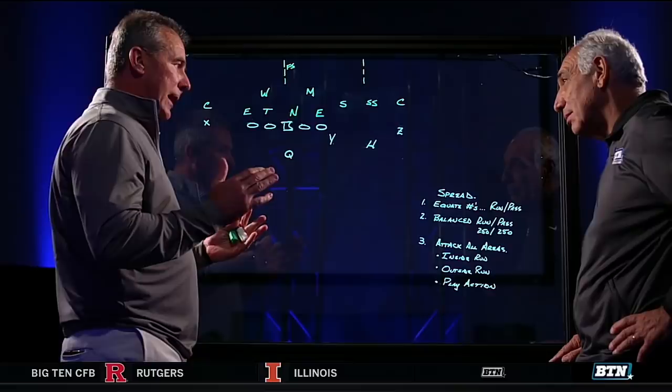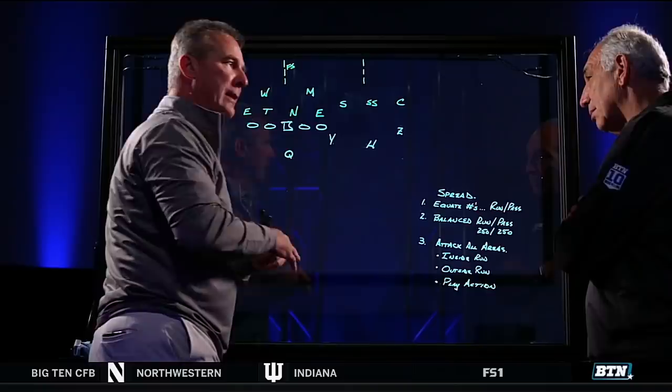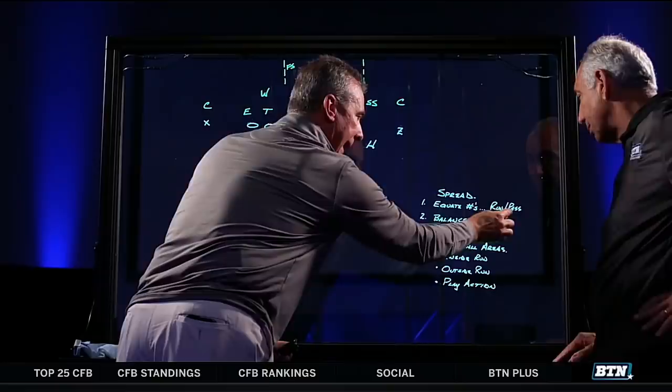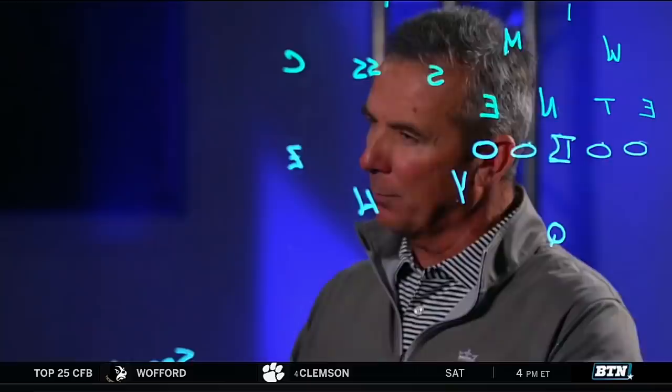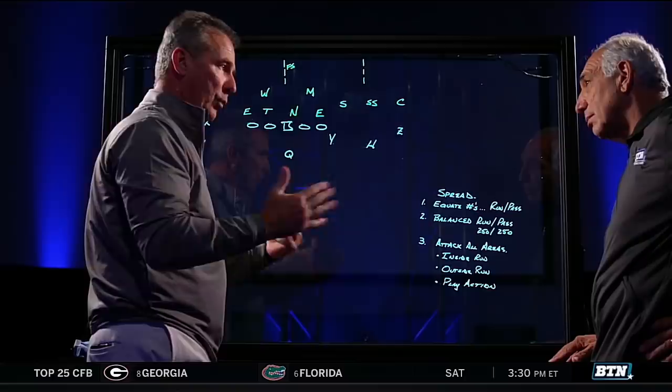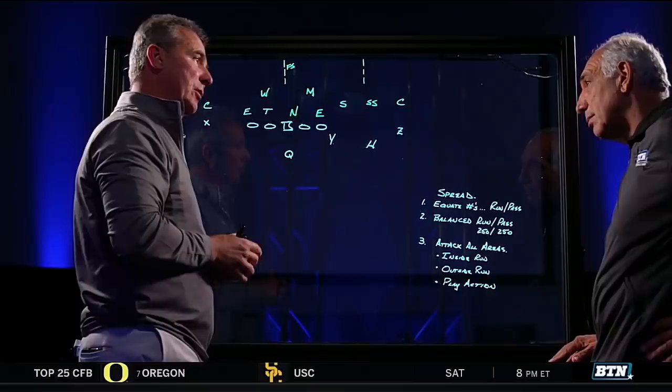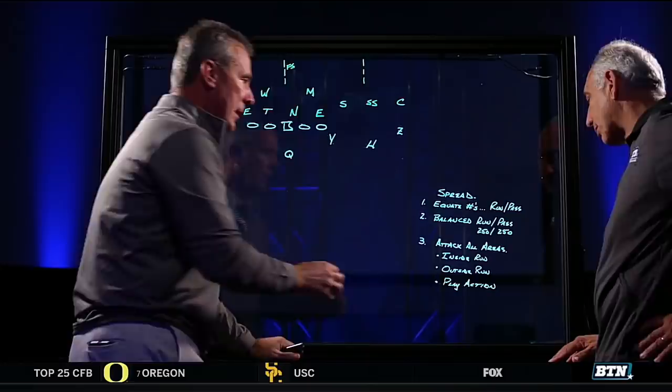Back in the early 90s when the spread phenomenon started to take shape, there were fundamental qualities to the spread offense. Number one: equate numbers — you don't want to run the ball into unblocked defenders. Number two: balance. Alabama, Ohio State, Oklahoma are probably the three best spread teams — they're very balanced. I used to say 250-250 ideally — 250 rushing, 250 passing — that's the perfect offense. And the final part: you want to attack all areas of the field.